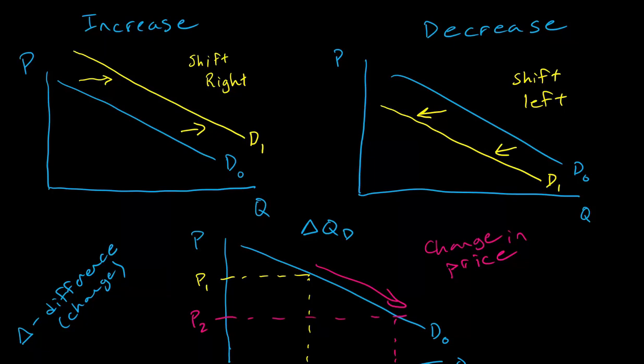With that out of the way, let's take a look at our first demand shifter: income. A person's income, or more broadly a consumer's income, is going to have an impact on the demand for a good. This makes sense — if your income changes, that's going to change how many of some good you're going to buy, or what type of good, and so on.